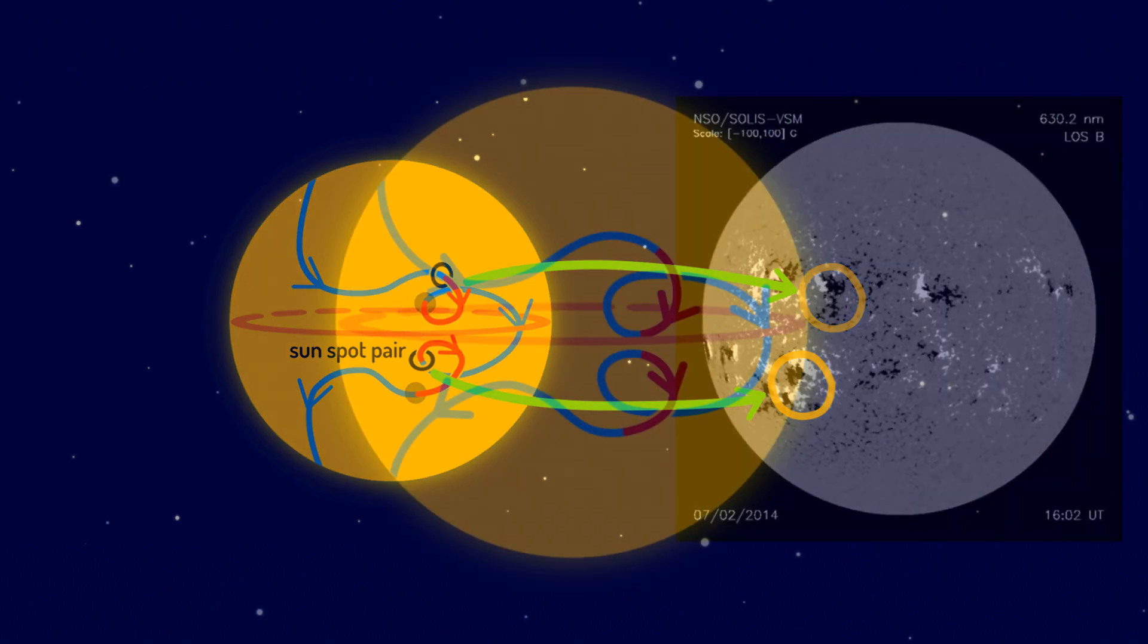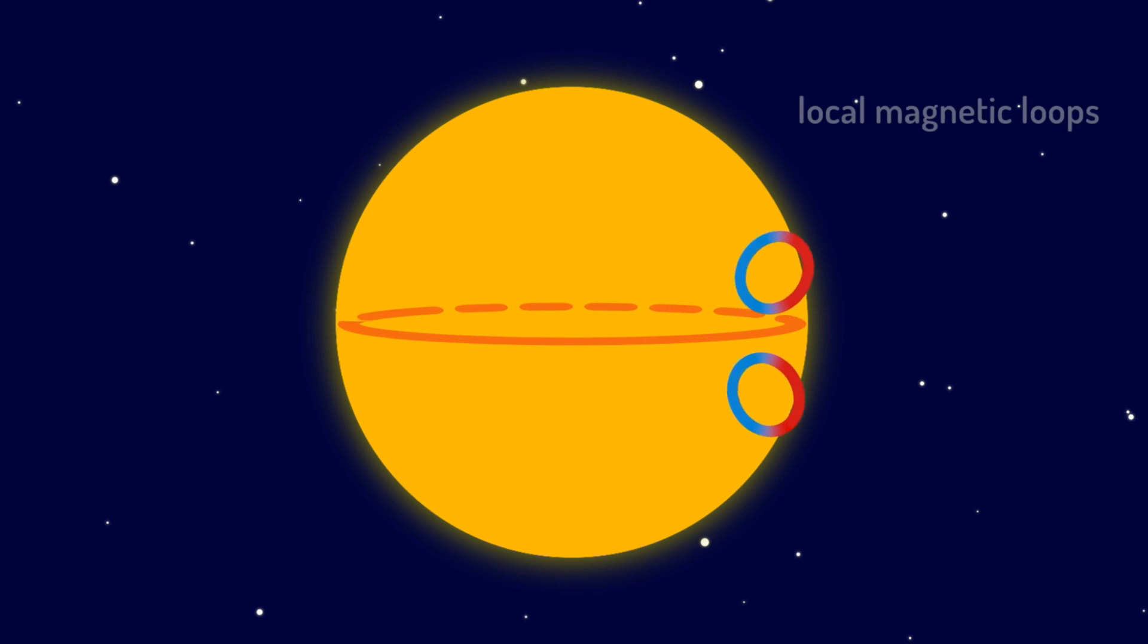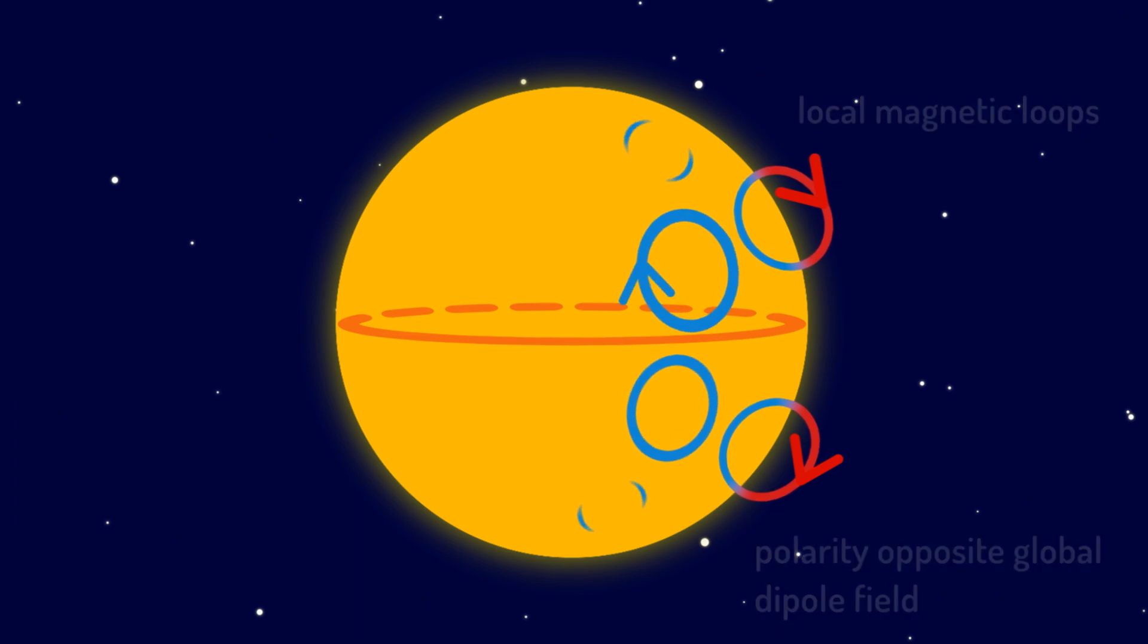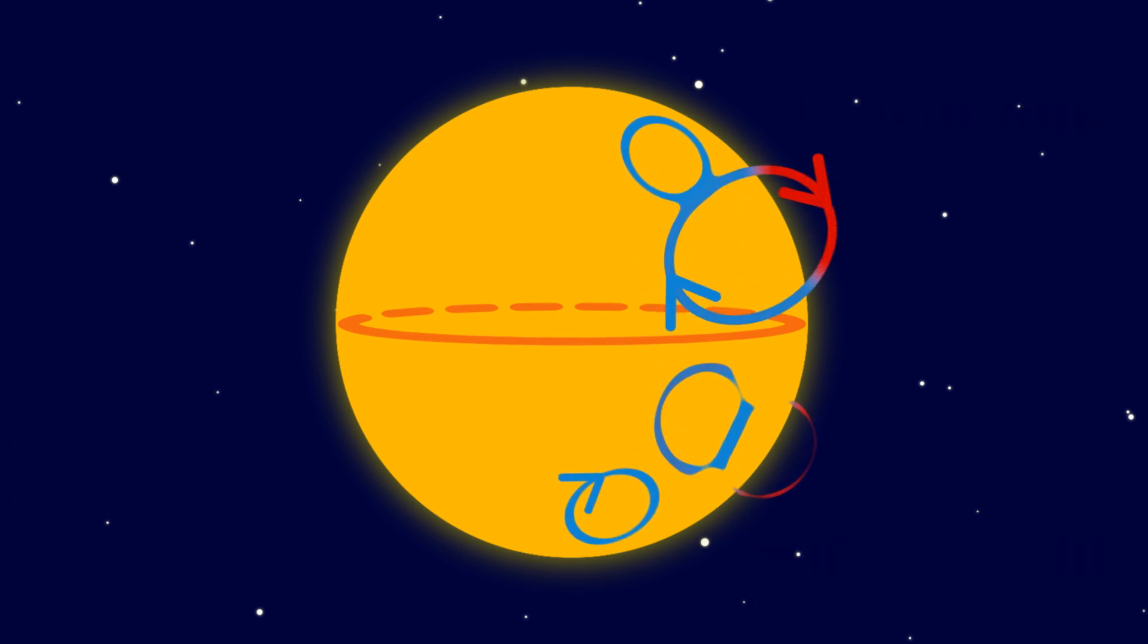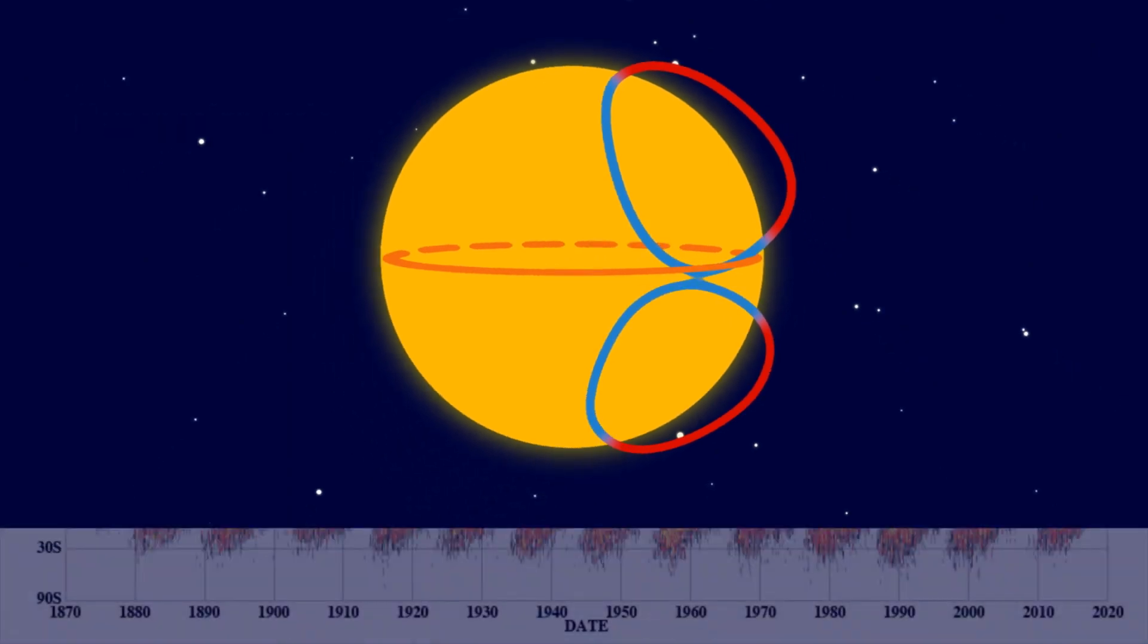These magnetic field line motions suggest the tendency to generate local magnetic loops that have a polarity opposite to the global dipole field. Many of them beneath the surface may merge and conspire to flip the sun's global dipole magnetic fields, explaining the 11-year solar cycle, as recorded by the butterfly diagram.